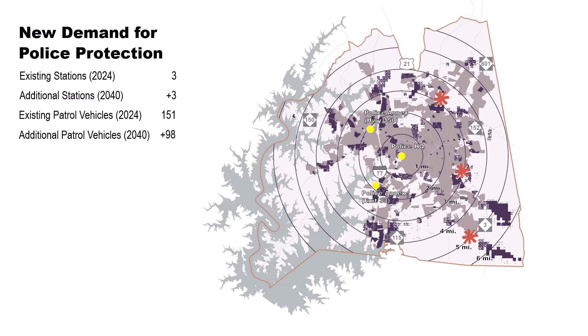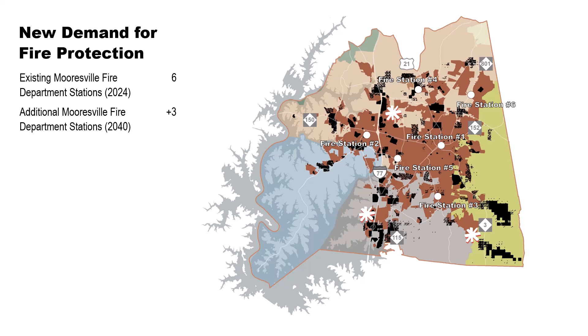Continued development away from existing police resources will stretch the department, necessitating three new police annex buildings — all marked with a red asterisk on the map — somewhere in the eastern portion of town limits. Ninety-eight new patrol vehicles will also be needed to keep pace with the number of new officers hired to match population growth. Three new fire stations — Station 7 in the Langtree area, Station 8 near the new Exit 38 Activity Center on Interstate 77, and Station 9 near the new industrial area along NC Highway 3 — all marked with a white asterisk on the map, will be needed to serve future development and maintain minimum fire suppression and response time standards. Additional staff and equipment would also be needed at existing stations.